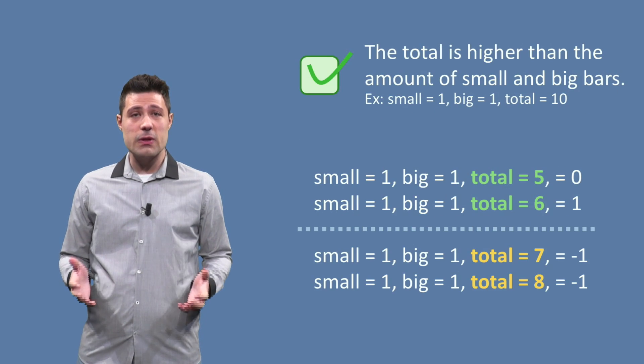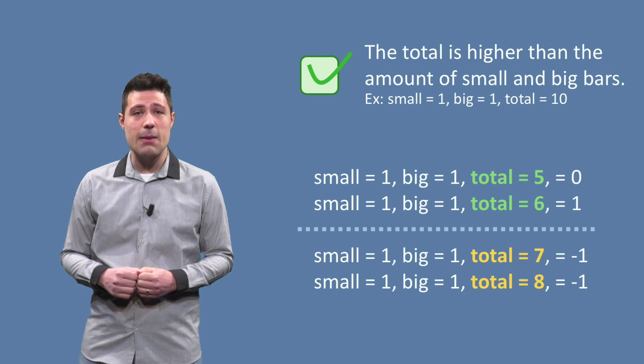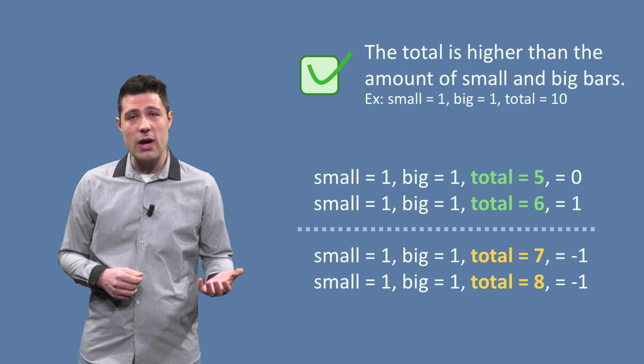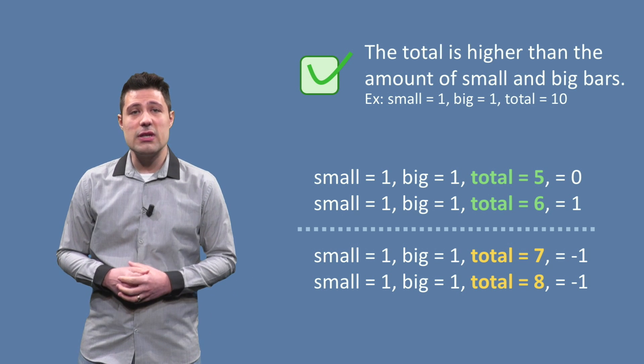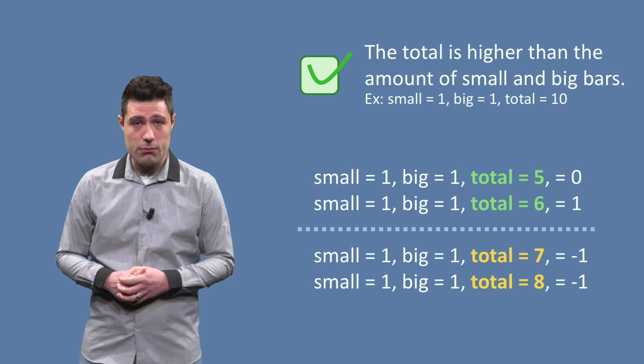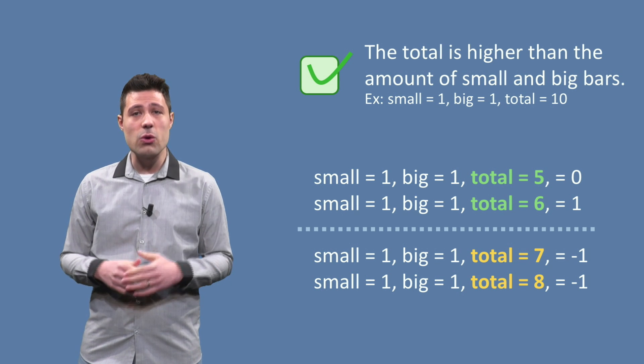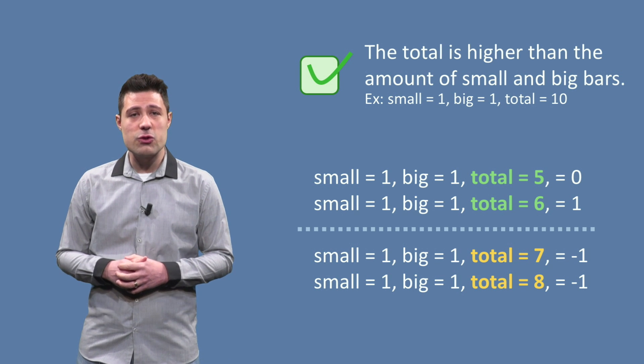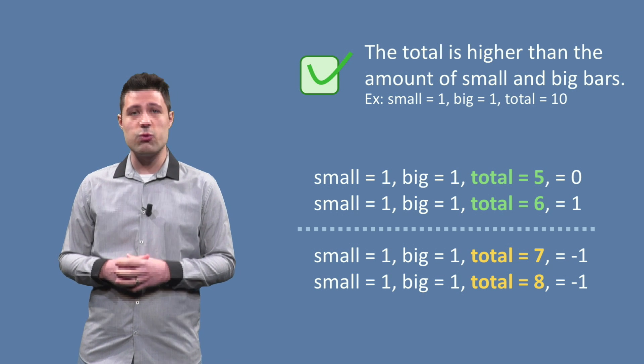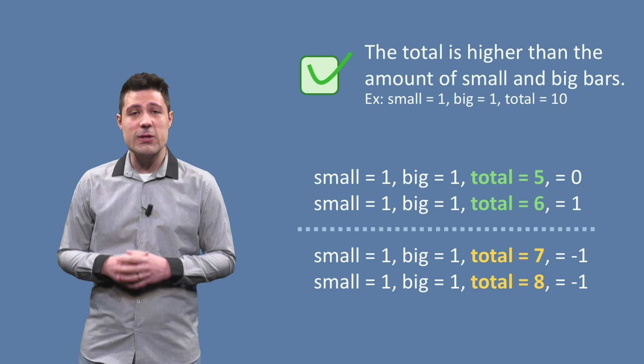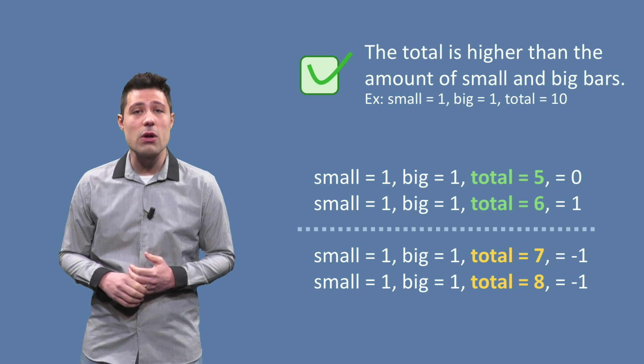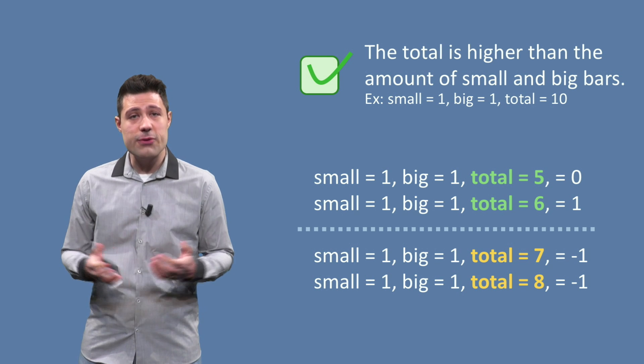In the first partition, the total is higher than the amount of small and big bars. We thought about small equals 1, big 1 and total 10 as an instance for this partition. We see the boundary when the total is small enough to have a valid solution. If we use small equals 1 and big equals 1 as starting point, we see that total equals 7 is the last input where the total is too high.